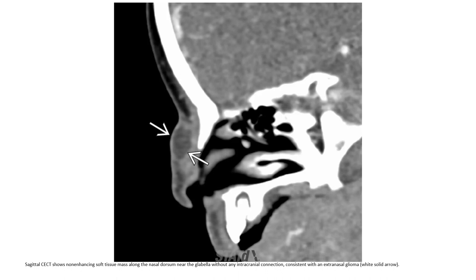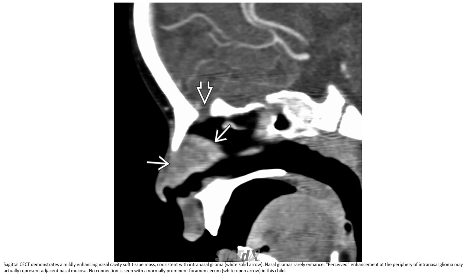On contrast imaging, ENG appears as a non-enhancing superficial mass along the nasal dorsum near the glabella, without any intracranial connection, consistent with extra-nasal glioma. Contrast imaging may also demonstrate a mildly enhancing nasal soft tissue mass consistent with intra-nasal glioma. Nasal gliomas rarely enhance; the peripheral enhancement of intra-nasal glioma may represent adjacent mucosa.